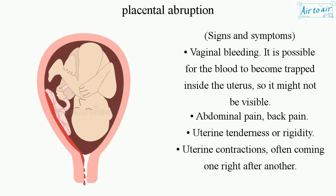Signs and symptoms include vaginal bleeding — though it is possible for the blood to become trapped inside the uterus so it might not be visible — abdominal pain, back pain, uterine tenderness or rigidity, and uterine contractions often coming one right after another.